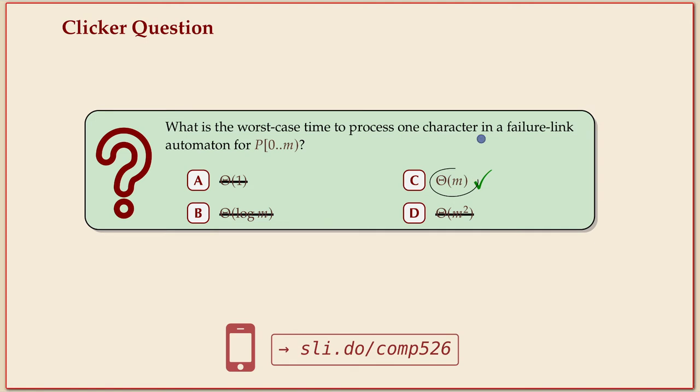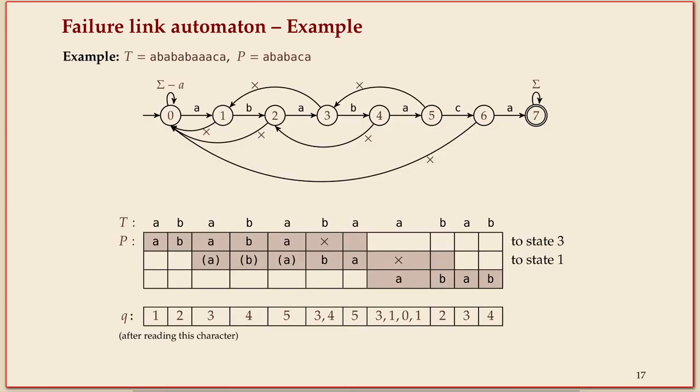But a failure link always brings us further to the left in the picture. They always lead to a state with a smaller index, because they correspond to shifting the pattern further. So you cannot have more than m failure links.